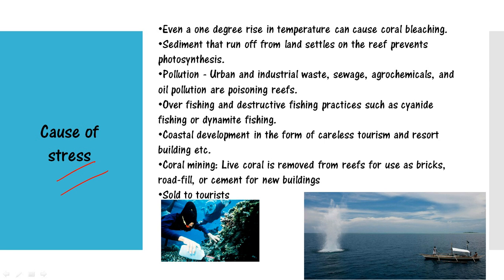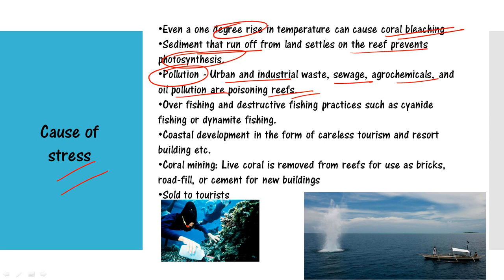Even a 1 degree rise in temperature can cause coral bleaching. Sediments that run off from the land and settle on the reef prevent photosynthesis. Pollution — including urban and industrial waste, sewage, agrochemicals, and oil pollution — is poisoning these reefs by increasing the level of nitrogen in the seawater, causing an overgrowth of algae which cuts off sunlight. Overfishing and destructive fishing practices such as cyanide fishing and dynamite fishing affect the ecological balance of the entire coral reef community.